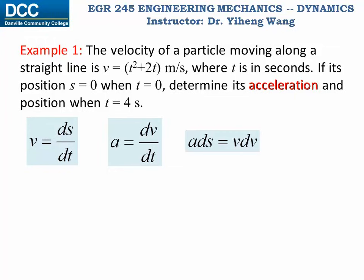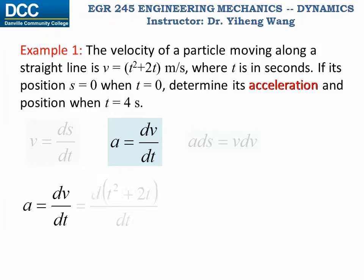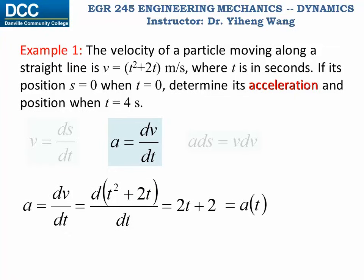and naturally we want to use the second equation, since this equation has all the variables of interest. So we start with this equation, substitute v with the time function, perform the differentiation, and get a equals to 2t plus 2.